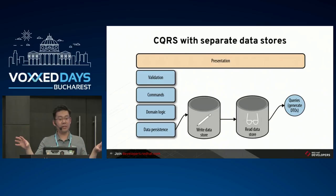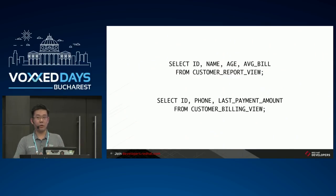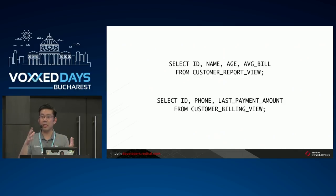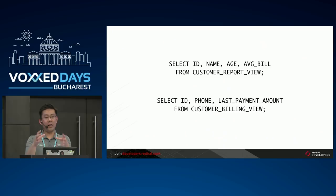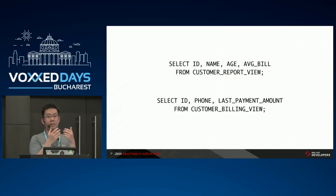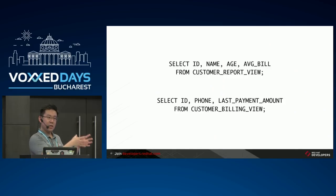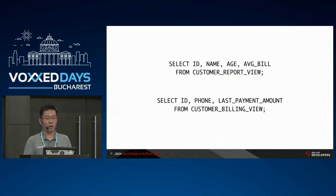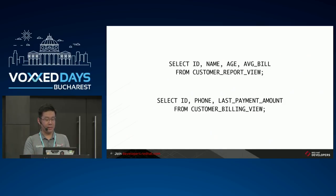Distributed data is not the only application for CQRS. Maybe you want to generate a report with complex aggregations or joins across multiple tables with frequent access. You create a database view. When you want to generate your report, you create a query against this view. A view is a CQRS read data store because you're still writing to the table and reading from another source. You can also use materialized views. This is mainly the discussion I had in my book, but we can discuss further steps now.